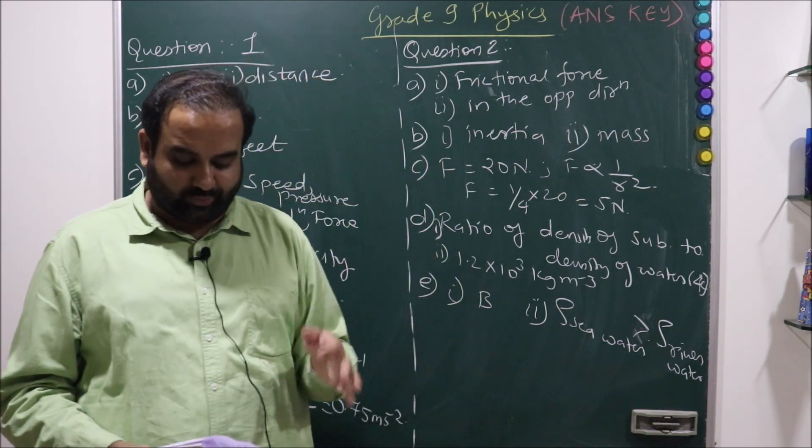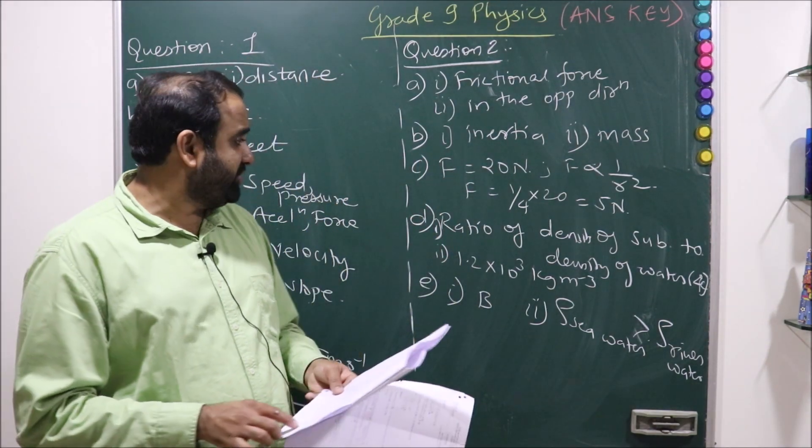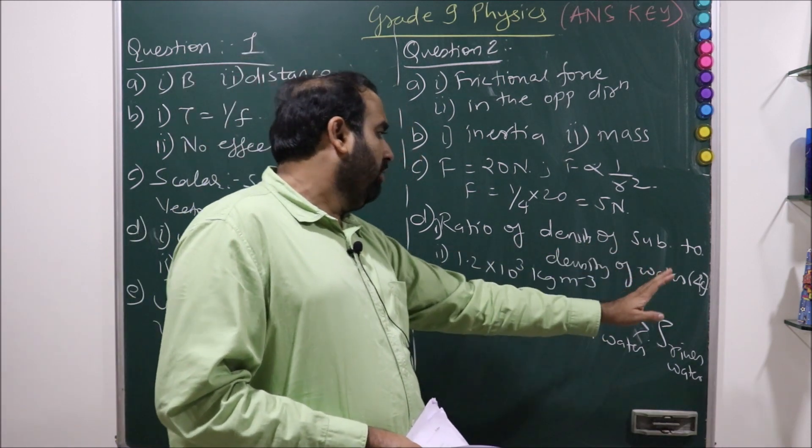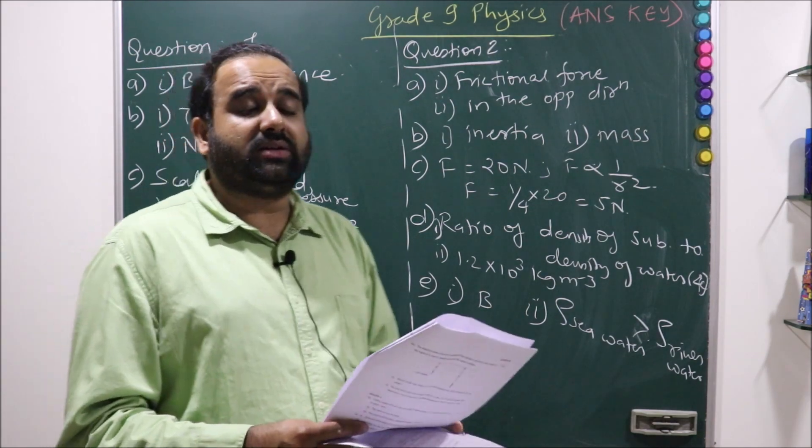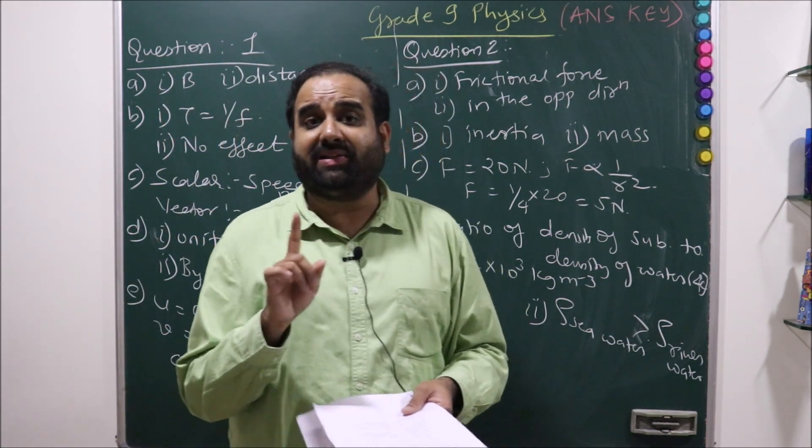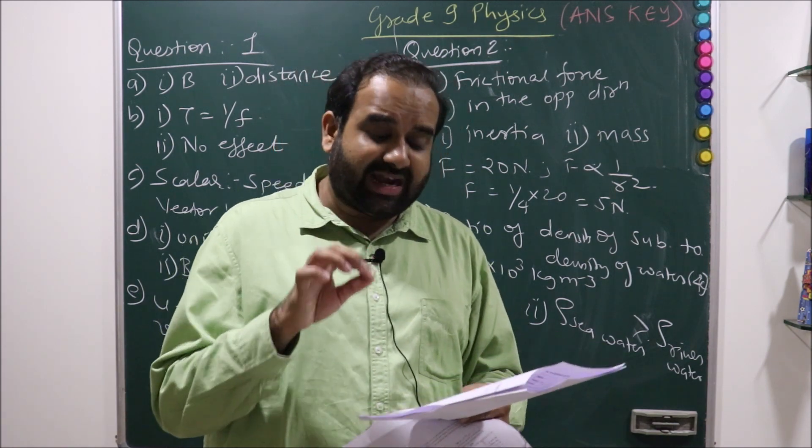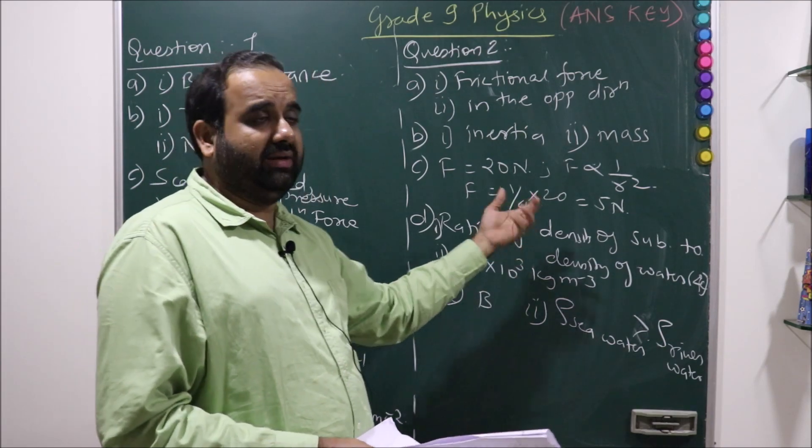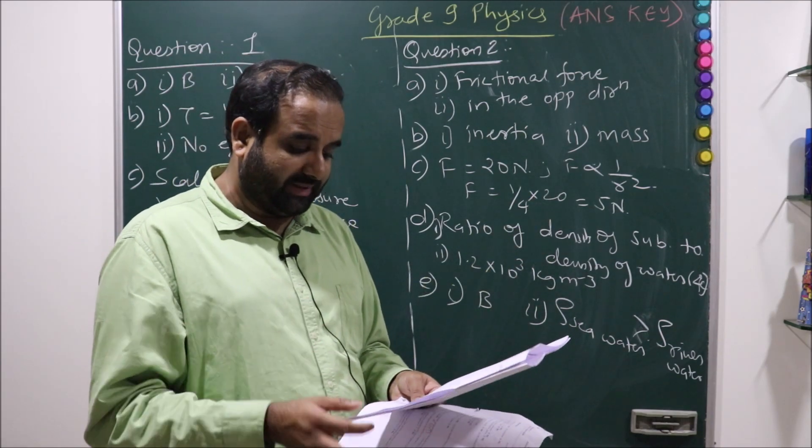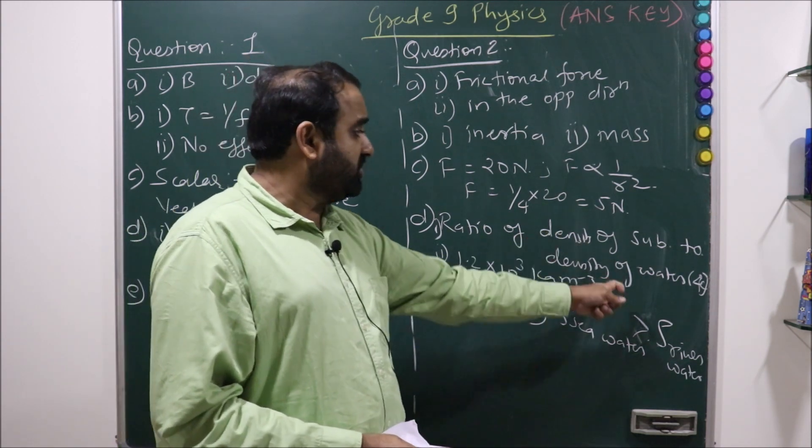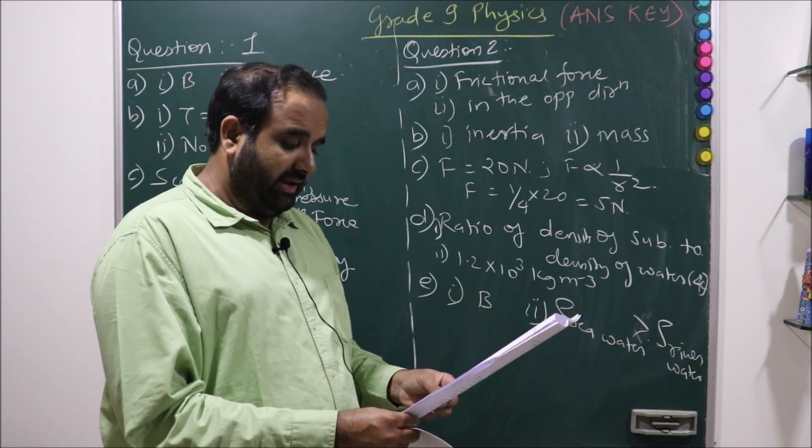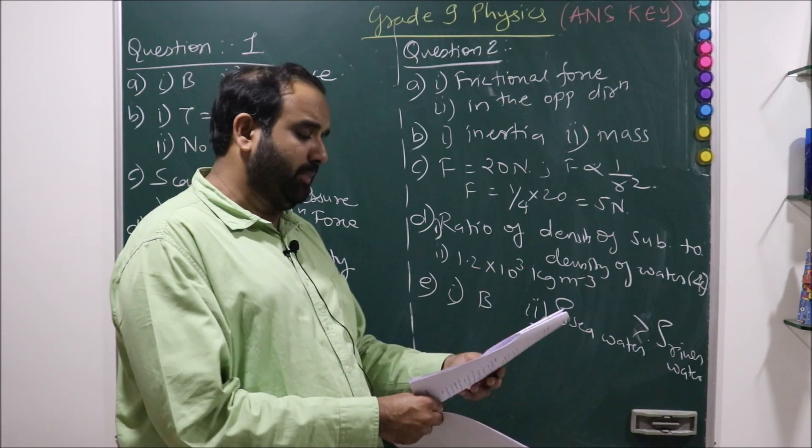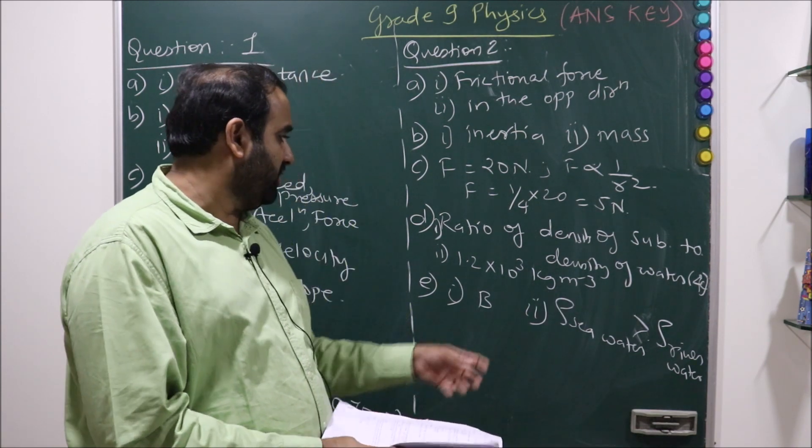What do you understand by the term relative density of a substance? Most very simple: ratio of density of a substance to the density of water at 4 degrees Celsius. Students, if you have written the formula only, you will not be getting the mark. Formula is not asked. Term puchha hai, so you have to be specific. It is the ratio of density of a substance to the density of water at 4 degrees Celsius. If the relative density of substance is 1.2, convert it into SI unit. It's very simple: 1.2 into 10 to the power 3 kg per meter cube.